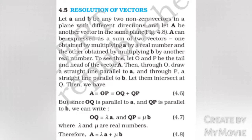To see this, let O and P be the tail and head of vector E. Then through O draw a line parallel to vector A, and through P draw a straight line parallel to vector B. Let them intersect at Q. Then we have vector E equals vector OP equals vector OQ plus vector QP. Since vector OQ is parallel to vector A and vector QP is parallel to vector B, we can write vector OQ equals λ vector A and vector QP equals μ vector B, where λ and μ are real numbers. Therefore, vector E equals λ vector A plus μ vector B.